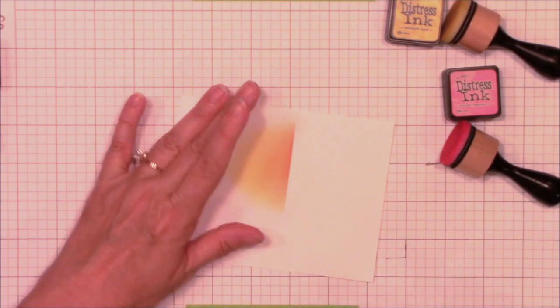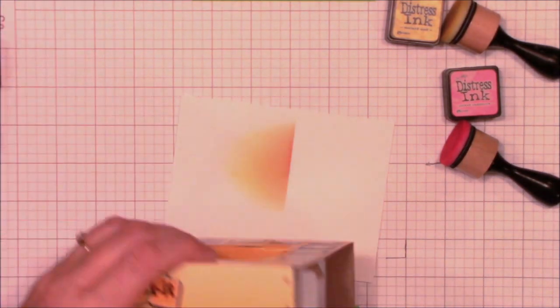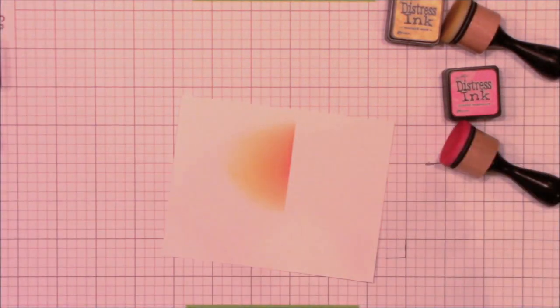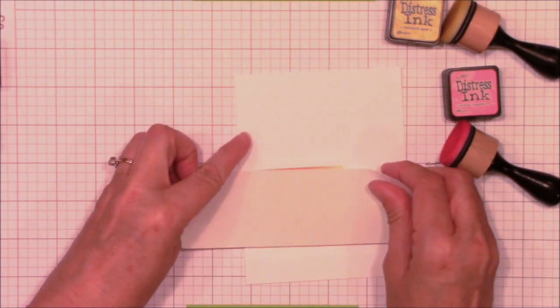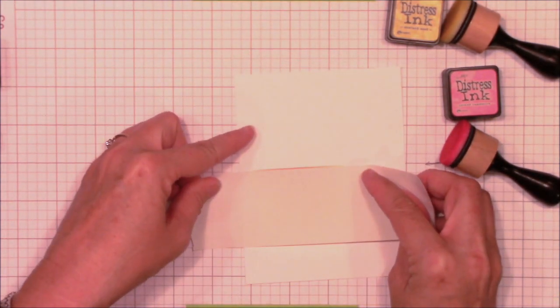I'm carefully removing the post-it tape and I'll add a fresh piece for my water line. You don't want to use the same tape as your sunset because distress inks are wet and the colors will transfer to create a muddy mess.